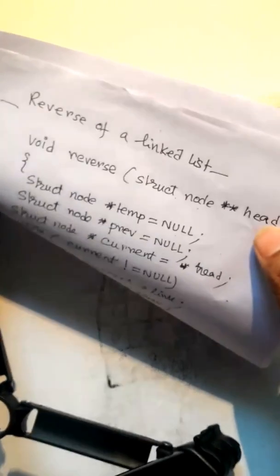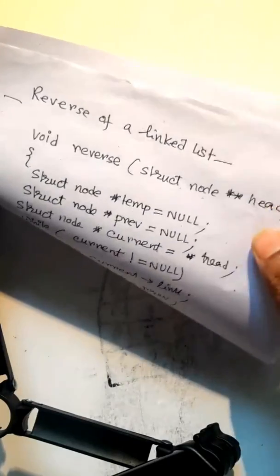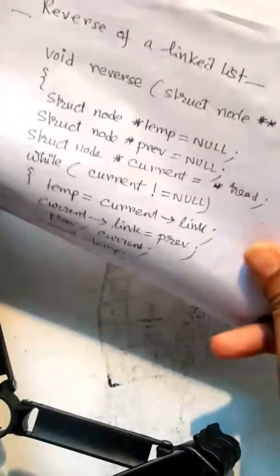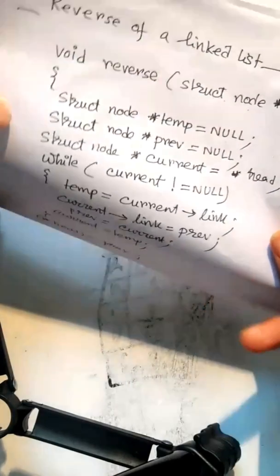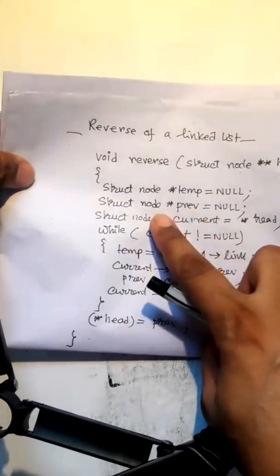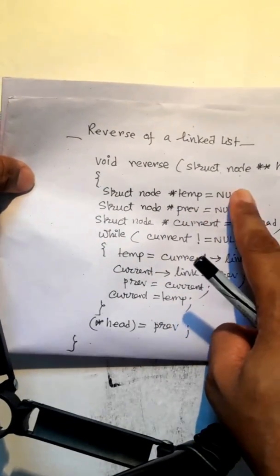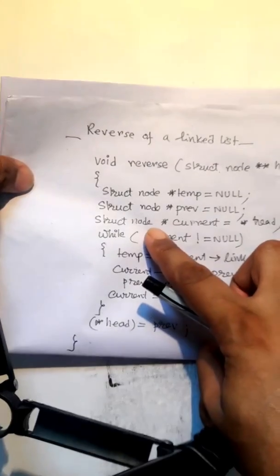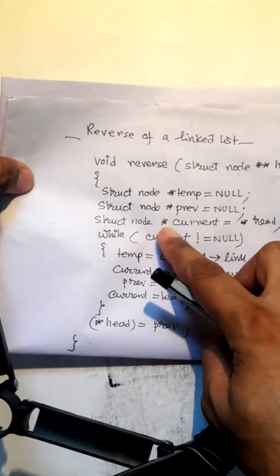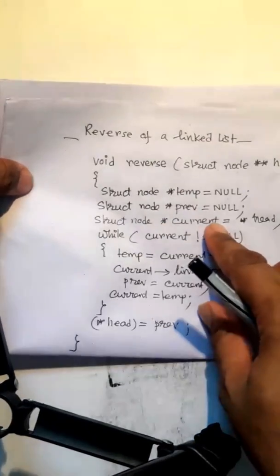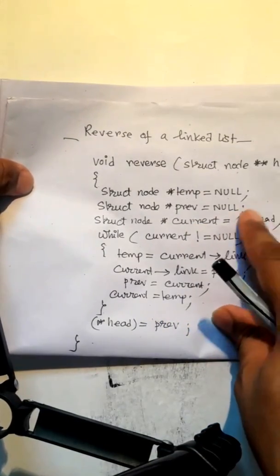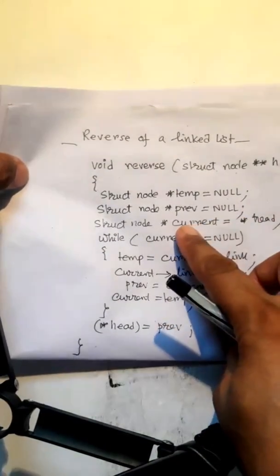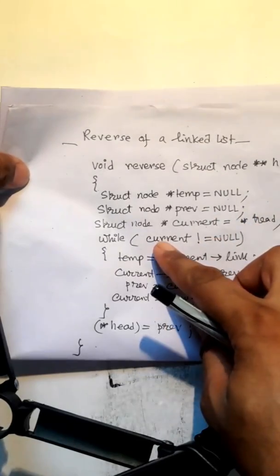Now we have to reverse the starting node and the values of the linked list. struct node pointer temp is a node type pointer, initially null. struct node pointer previous is another node type pointer, also initialized to null. These are the initializations. Another pointer, struct node star current, stores the address of the head node, so current is assigned the address of head.